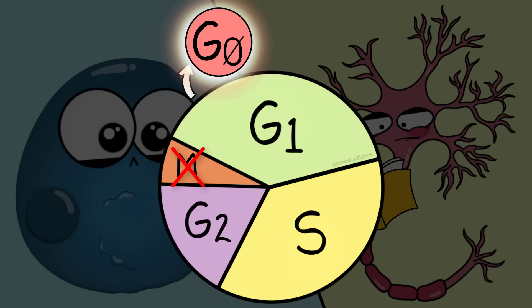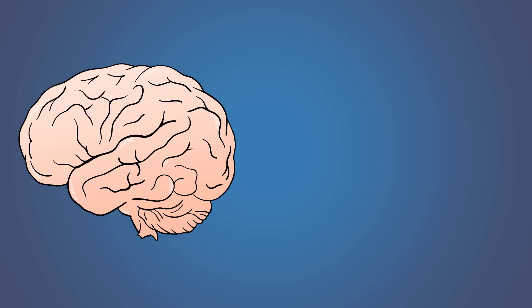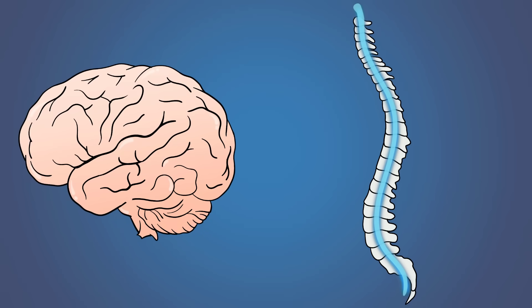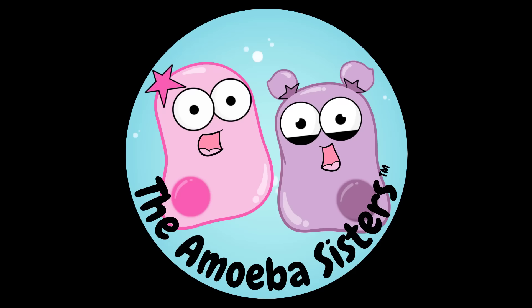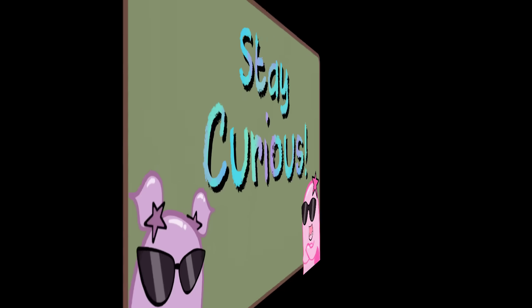This can be one reason why a major injury to the brain or spinal cord can have challenges with healing, as many of those cells may not be able to replicate—a topic that definitely continues to be researched. Well, that's it for the Amoeba Sisters, and we remind you to stay curious.